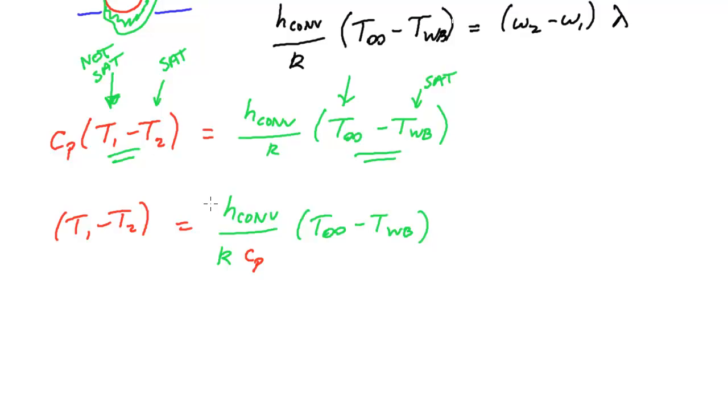Where the convection coefficient h over this mass transfer coefficient K times the specific heat of the air Cp is approximately one. And we have a name for this thing here. This is called the psychrometric ratio. And it just so happens that for water and air in this kind of setup, that this is close to being true.